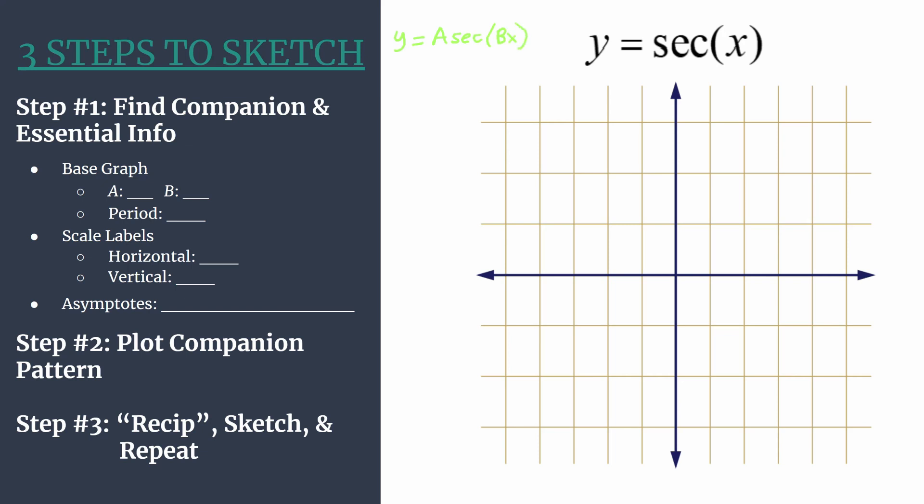And knowing that we can jump into step one where we're going to find the companion equation and then identify its essential information. So we know that the companion equation to a secant equation is going to be cosine. So our companion equation will be y equals cosine of x.